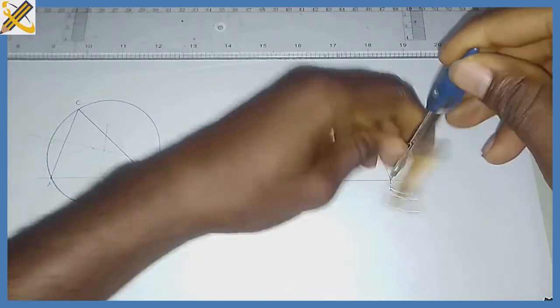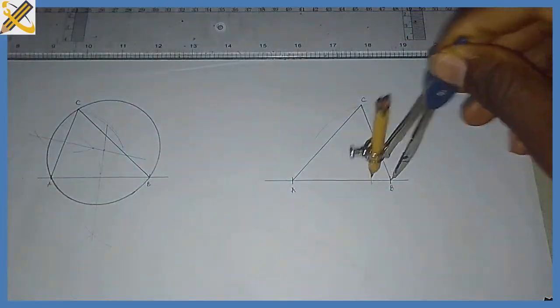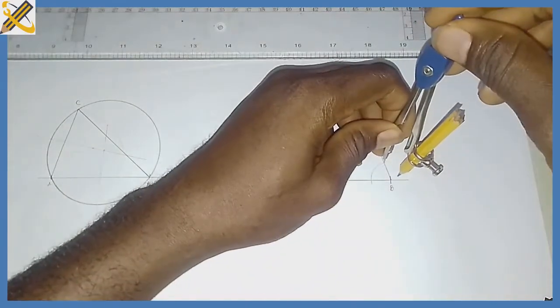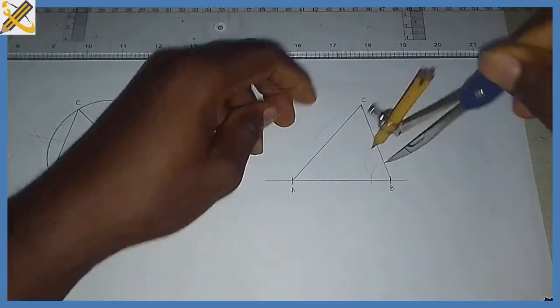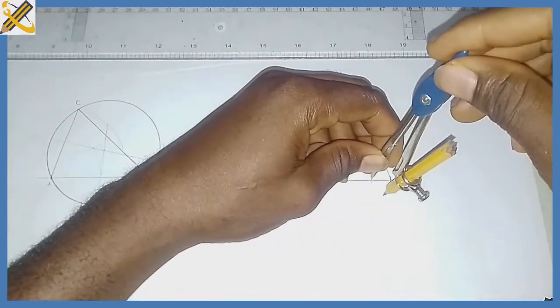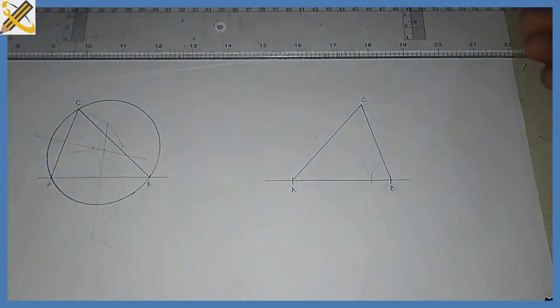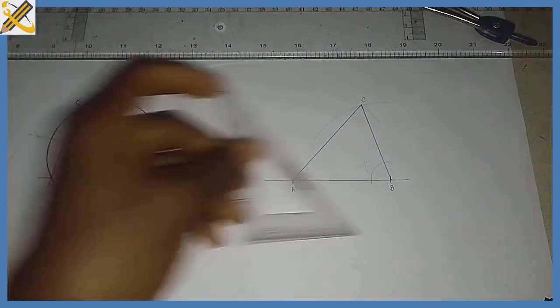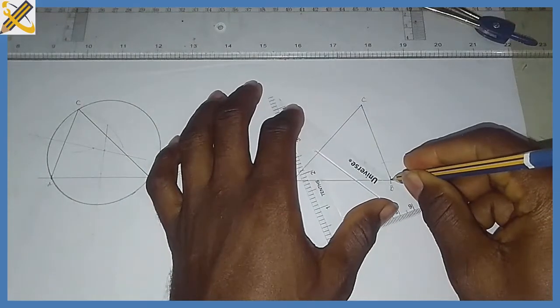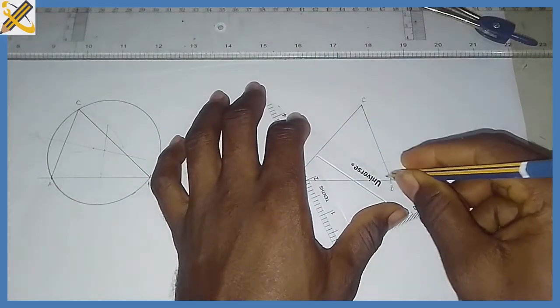start from point B. Alright, so with an angle bisector from here, I'm going to draw in this manner.